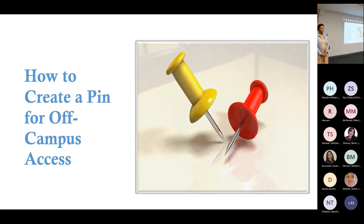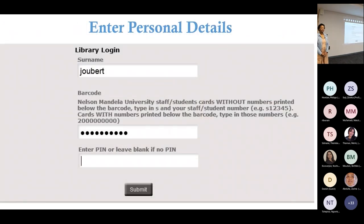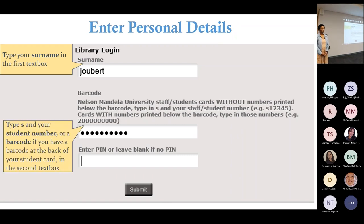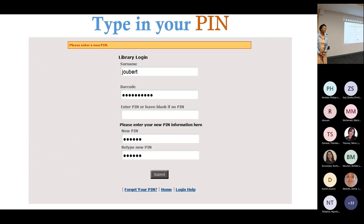So how to create that PIN? You go to the library homepage. Under the useful links, there is a link where you can click where it says 'My Library Record.' If you click on that link, you have to type in your surname, and then the barcode will usually be your student number — it will say S221 — or if you are a staff member, it starts with an S and then your staff number, and then you click on the submit button.